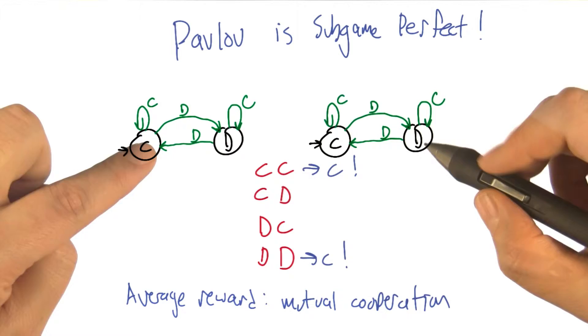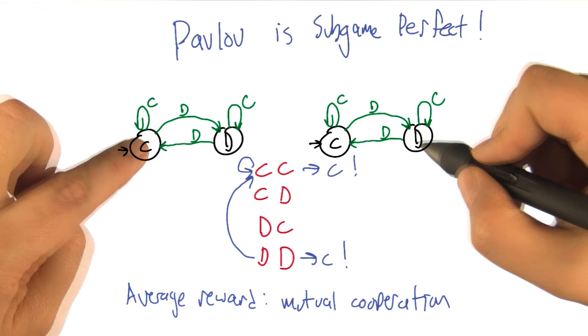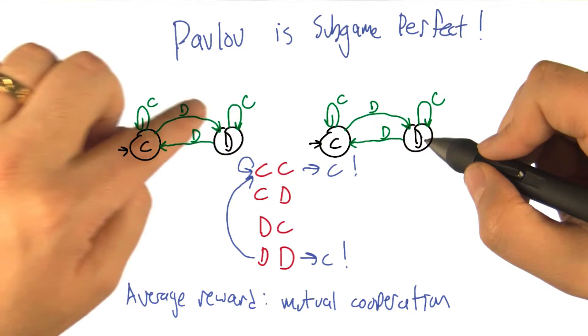So when we're in the cooperate defect state, then on the first move, the right hand Pavlov just defected, so that causes this transition.